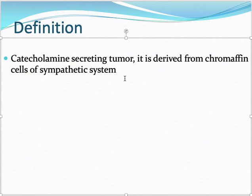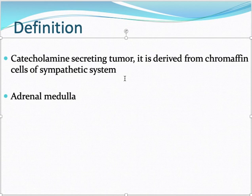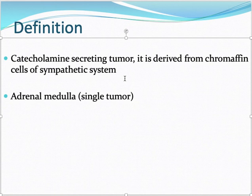Most commonly, the tumor is present in the adrenal medulla, which is the site where catecholamines are formed. Most commonly it is a single tumor in the adrenal medulla, though it can occur in other places as well. Because it releases more and more catecholamines, it causes high blood pressure or hypertension in patients.